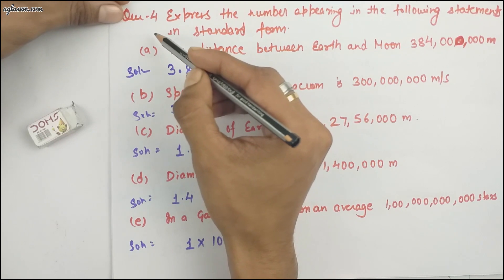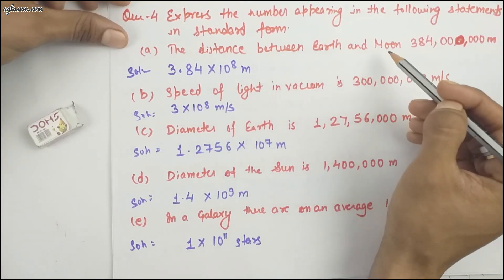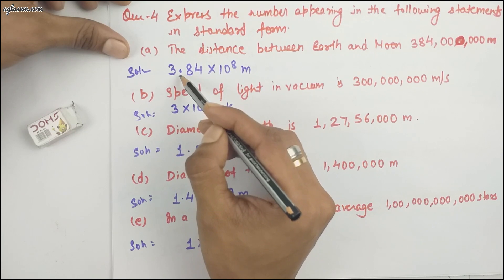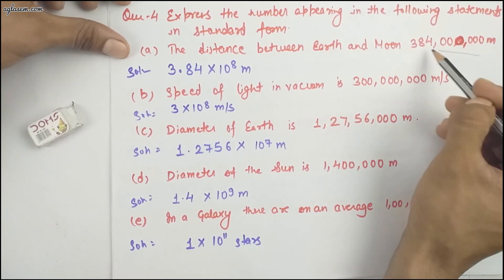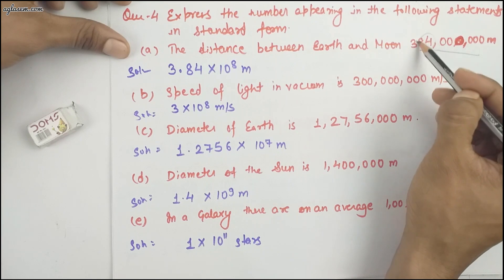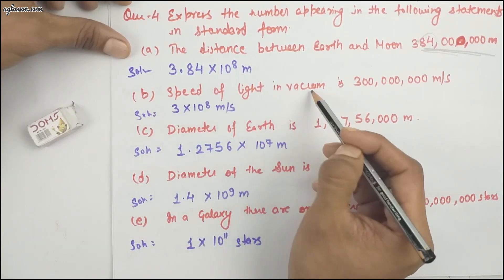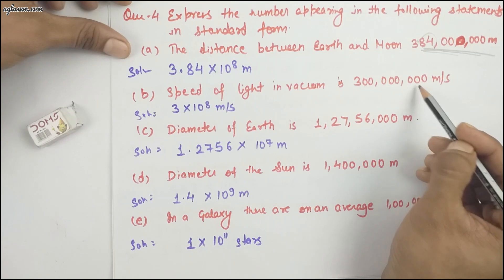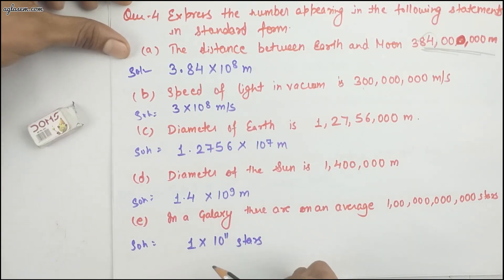Moving to question number 4, it says express the numbers appearing in the following statements in standard form. Part (a): the distance between Earth and Moon is 384,000,000 metres, which can be written as 3.84 into 10 to the power 8 — because there are 8 place values and the decimal is placed after 3 to give 3.84. Part (b): the speed of light in vacuum is 3,00,00,00,000 metres per second, which can be written as 3 into 10 to the power 8 metres per second. Similarly, solve the other questions and let us know your answers.